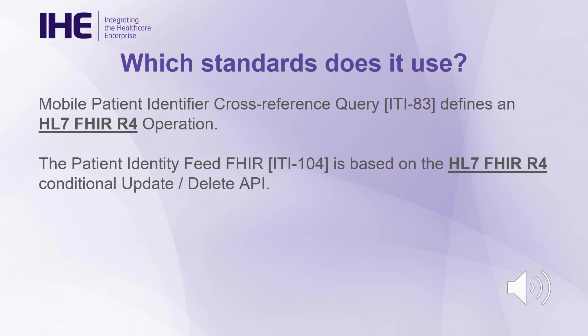The mobile patient identifier cross-reference query defines an HL7 FHIR R4 operation. The patient identity feed FHIR is based on the HL7 FHIR R4 conditional update and delete FHIR API.